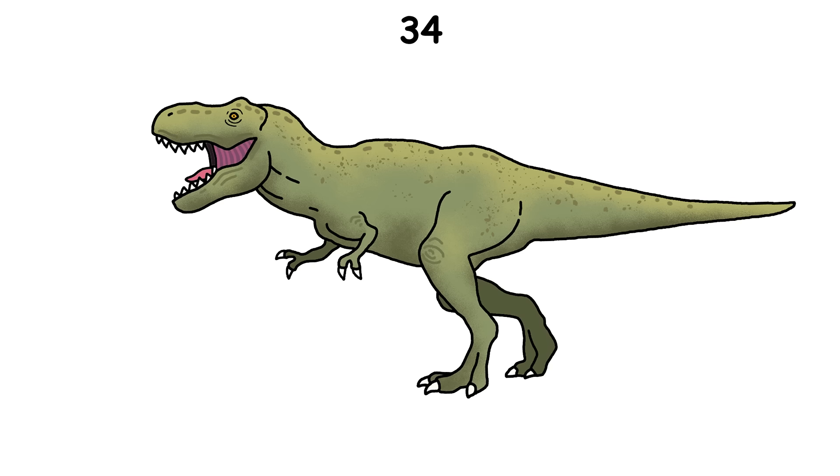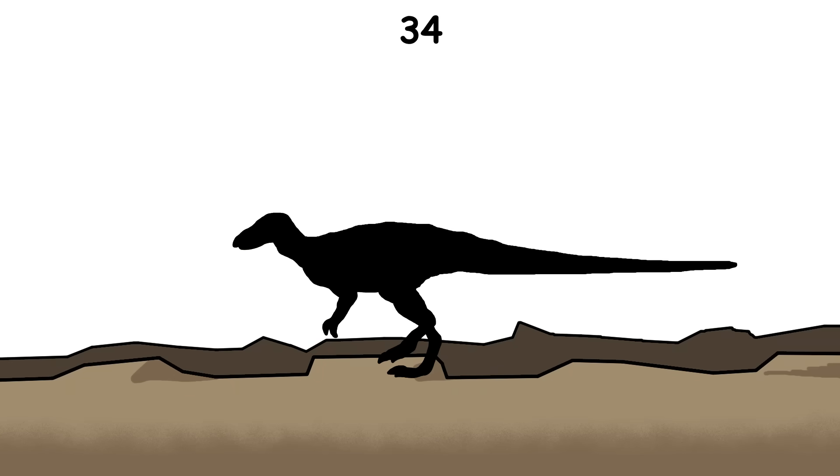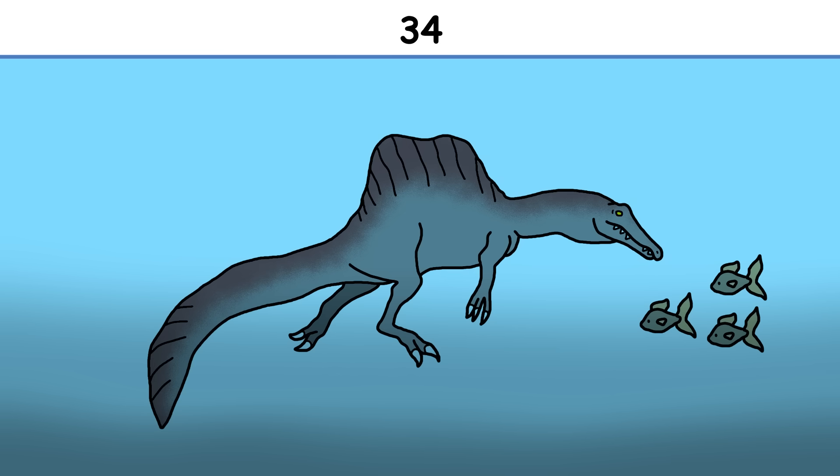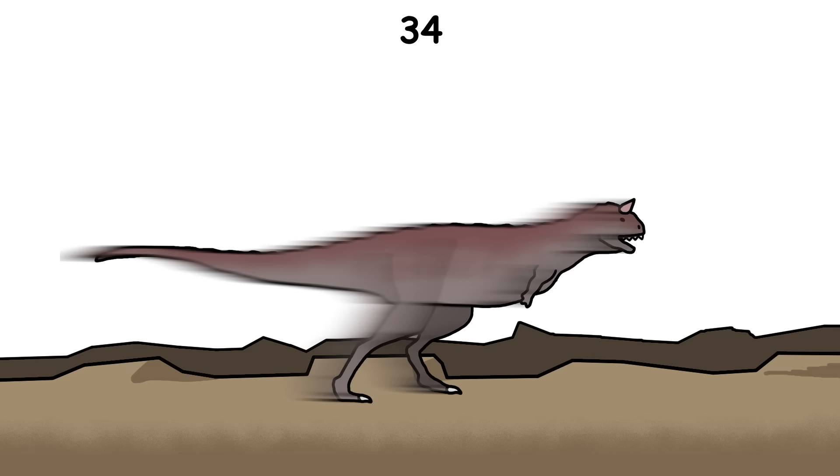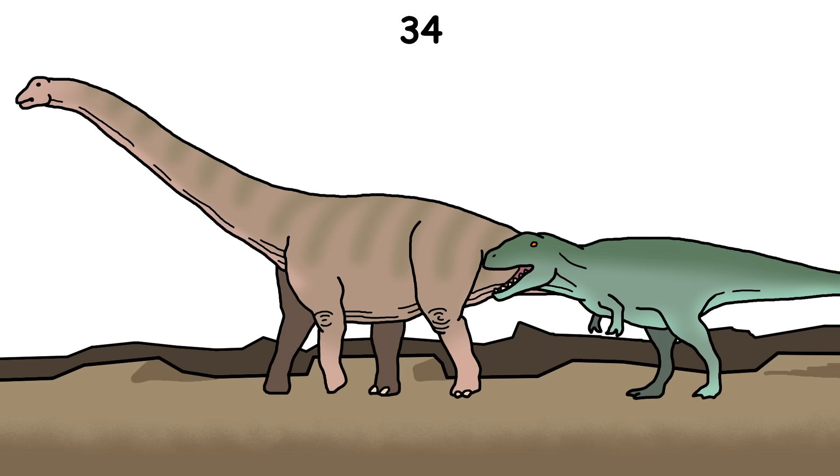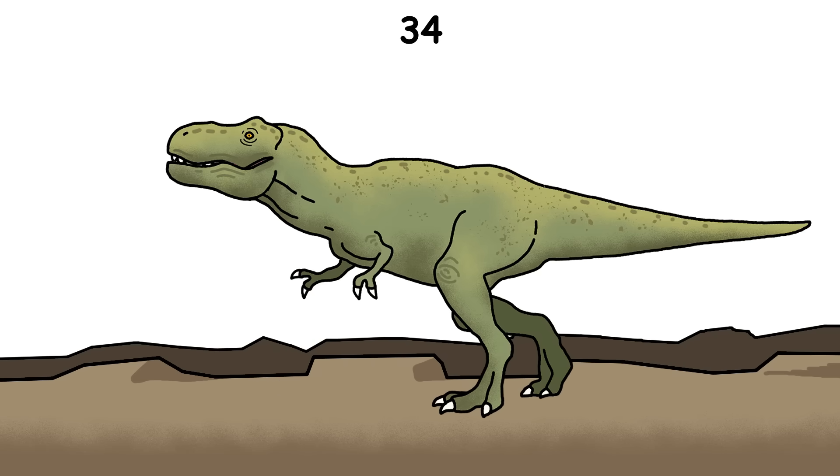The idea that Tyrannosaurs were the best predators is a myth. They were great at what they did, but not better in every way than other theropods. Spinosaurids, for example, were specialized for hunting fish and water prey, something Tyrannosaurs couldn't do. Carnotaurus was faster, likely able to sprint over 28 miles per hour, and Carcharodontosaurs could take down giant sauropods much bigger than themselves. Tyrannosaurs just had a powerful bite and were built for crushing.